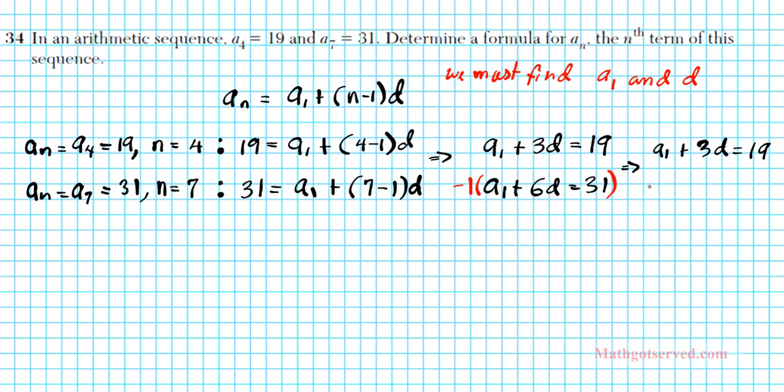The a1's already have the same coefficient, so it's easy for us to eliminate a1 by simply multiplying the second equation by negative 1. We're going to have a1 plus 3d equals 19, and the second equation becomes negative a1 minus 6d equals negative 31. Now that the a1's are opposites, we combine downwards. We'll have negative 3d equals negative 12.